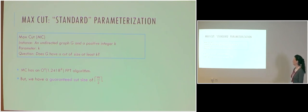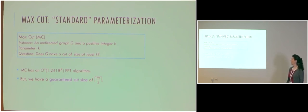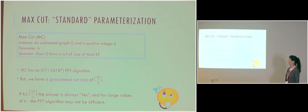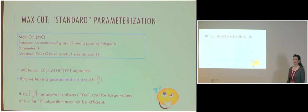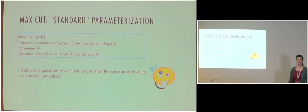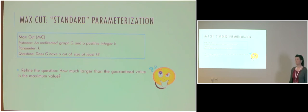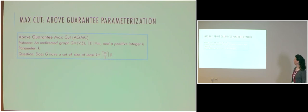MaxCut has a 1.2418 to the K FPT algorithm. But we have seen a guaranteed cut size of m over 2. Now if K is at most m over 2, then the answer is always yes. And for large values of K, the algorithm may become inefficient. This calls for refining the question and asking how much larger than the guaranteed value is the maximum cut size.